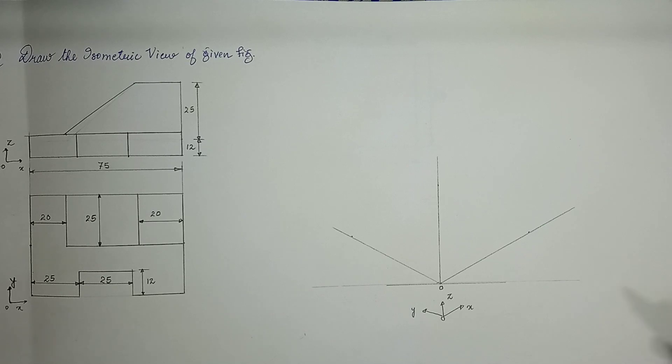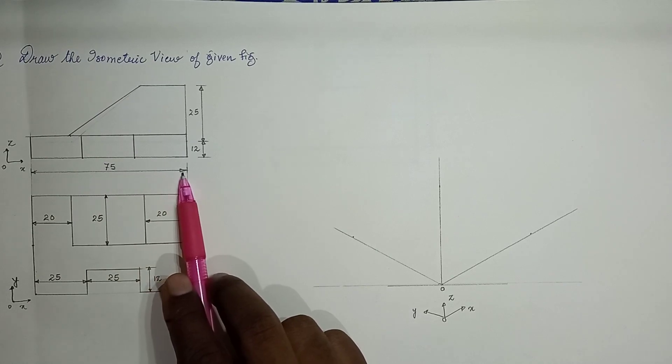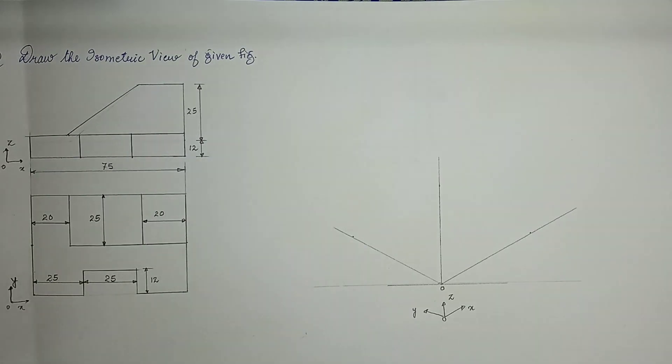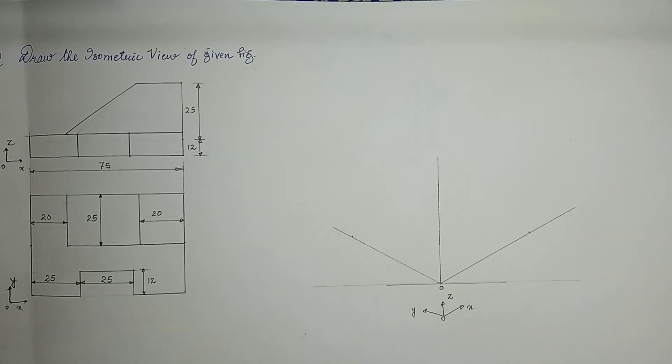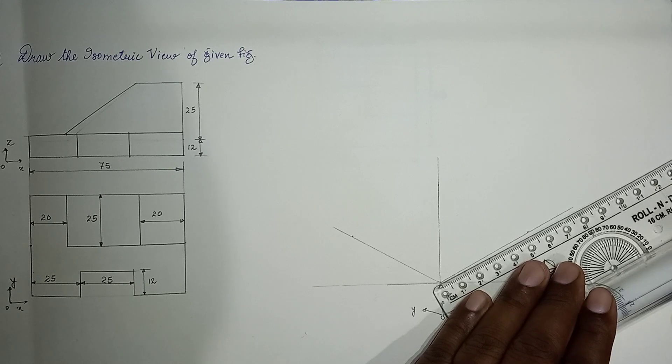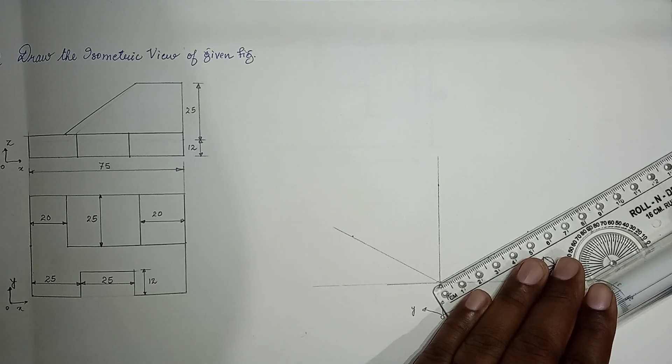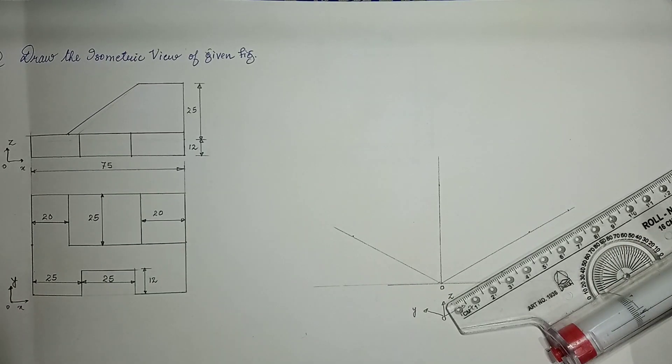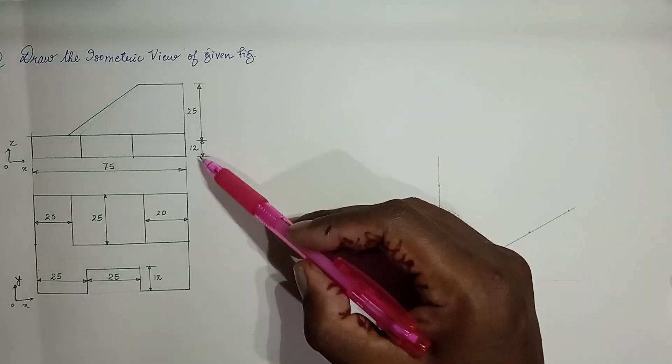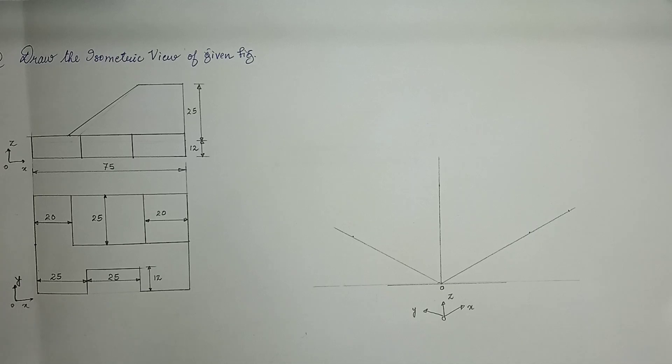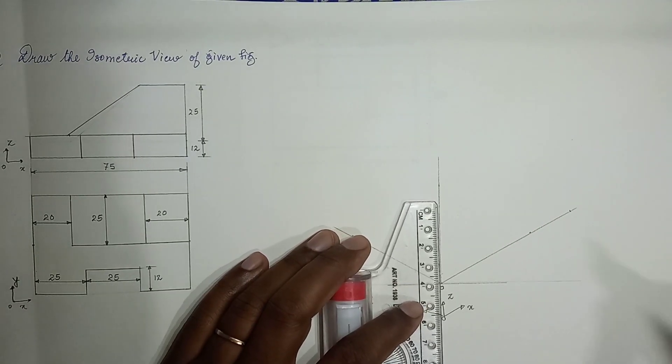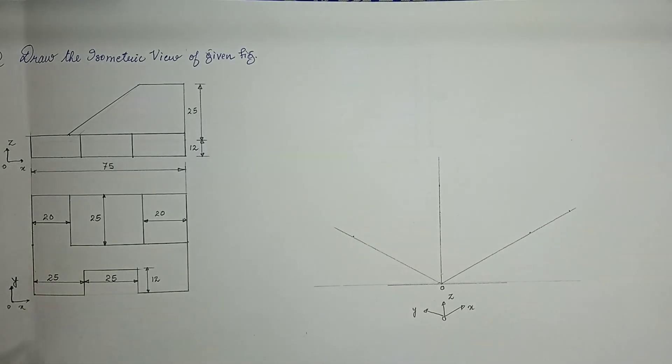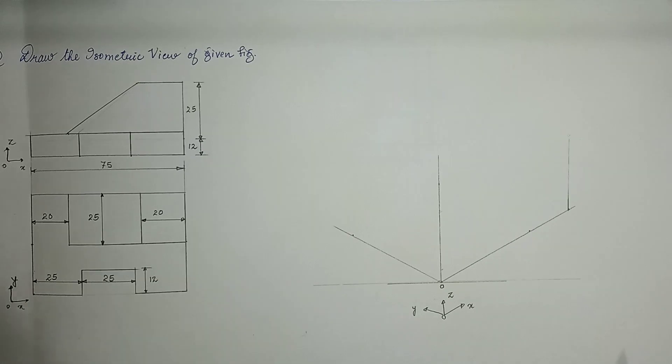Looking at the scenario, more details will be visible in this direction when the observer is looking from this direction. So let us draw the front view in this direction. In the front, along x it is 75, along z it is 12 and 25, so we mark the distances accordingly. Let us mark 75 along x.